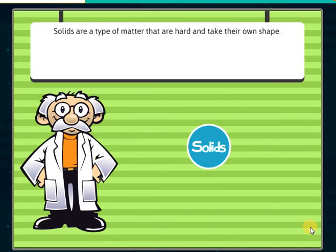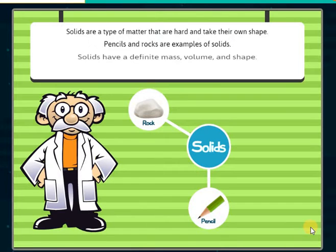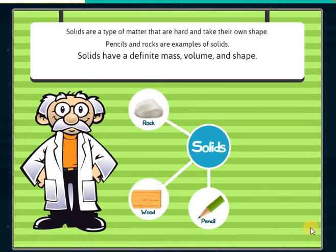Solids are a type of matter that are hard and take their own shape. Pencils and rocks are examples of solids. Solids have a definite mass, volume, and shape.